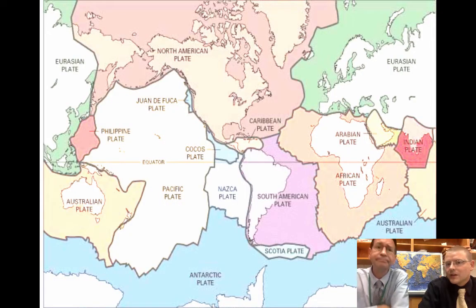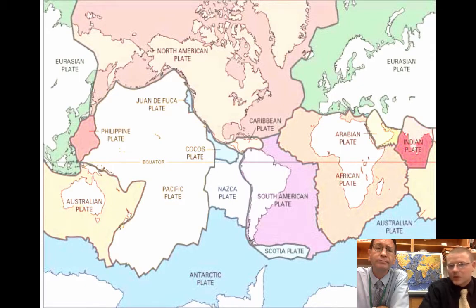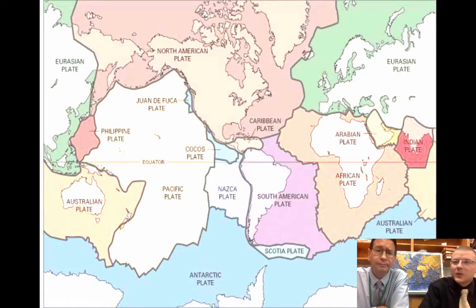We have the different plates that come from geologists mapping out each of these different movements. There's a North American plate, there's a big Pacific plate, a South American plate — and Europe and Asia are kind of on one large plate together.